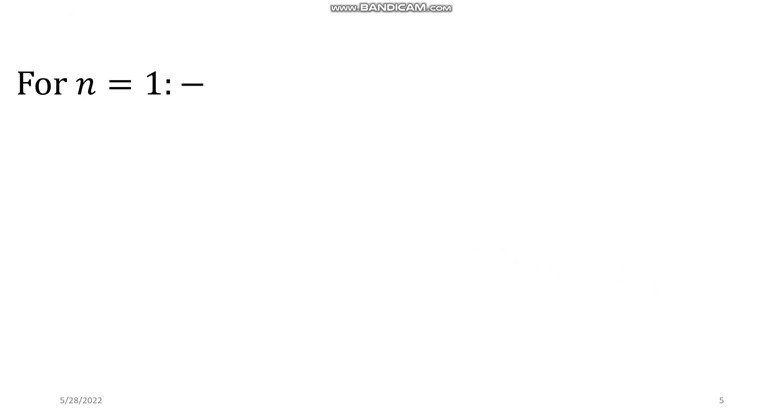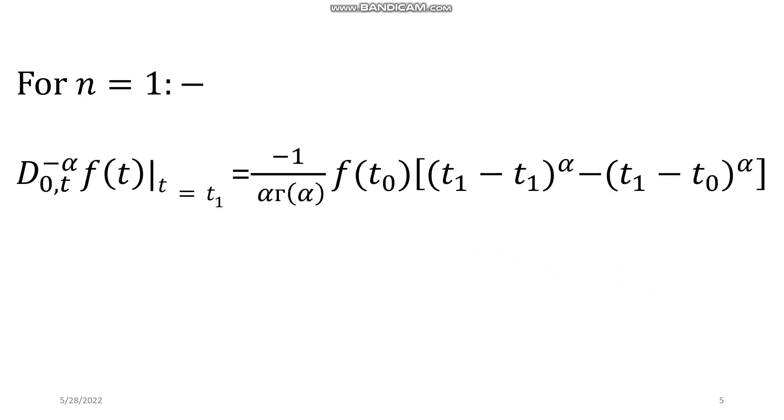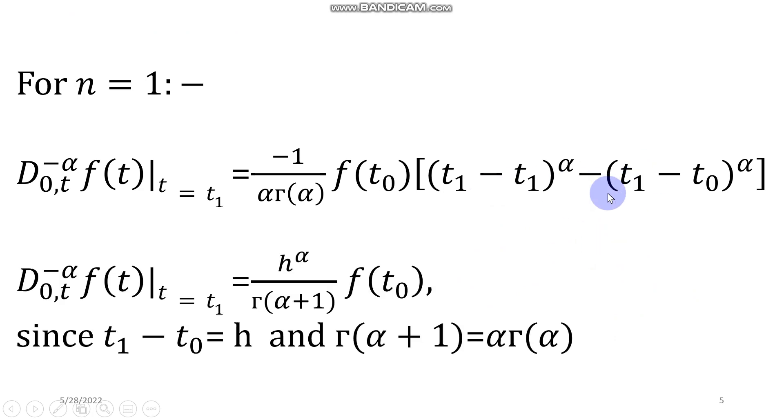Now for n equal to 1 in the previous state, you will obtain this kind of equation. Simplification of this equation will give you h^α divided by Γ(α+1) times f(t_0), where t_1 minus t_0 is the step size, and I have used this property of the gamma function.